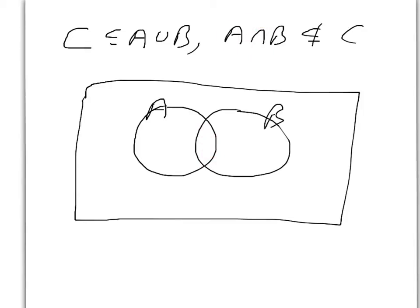So in other words, we don't want C to contain all of this stuff here. So why don't we draw something like this? We can make this our C. So we're guaranteeing that there are certain things in A intersect B that aren't in C.